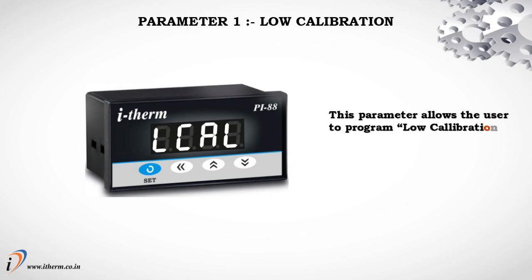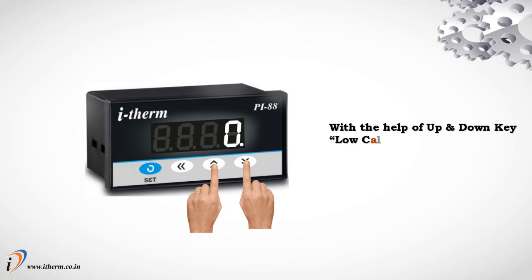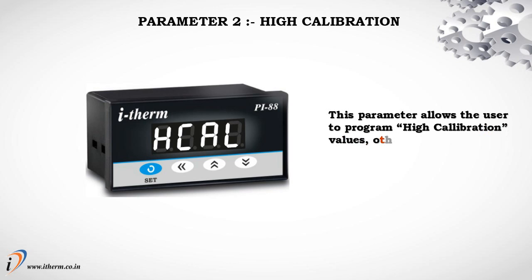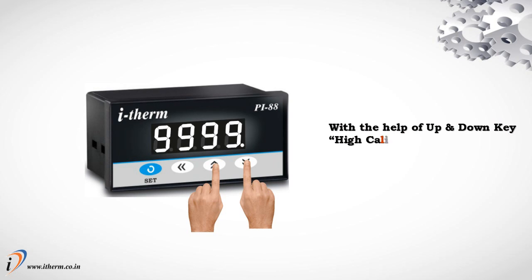Parameter 1: Low Calibration. This parameter allows the user to program low calibration values other than the factory low calibration values for the selected input type. With the help of the Up and Down keys, the low calibration can be adjusted. Parameter 2: High Calibration. This parameter allows the user to program high calibration values other than the factory high calibration values for the selected input type. With the help of the Up and Down keys, the high calibration can be adjusted.